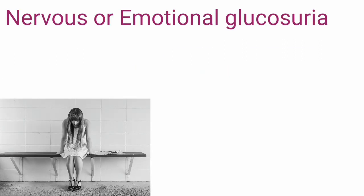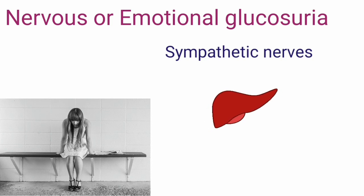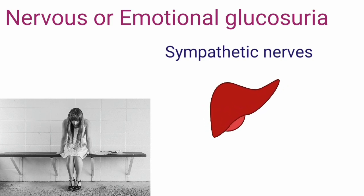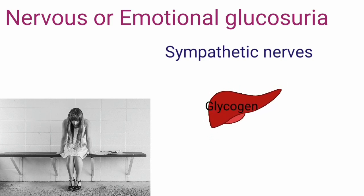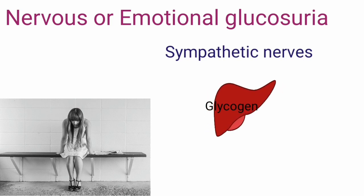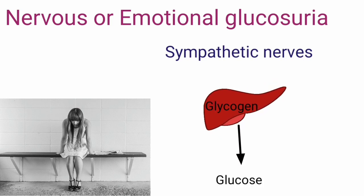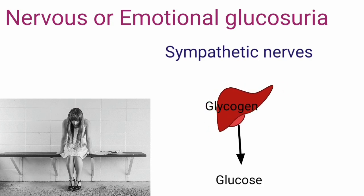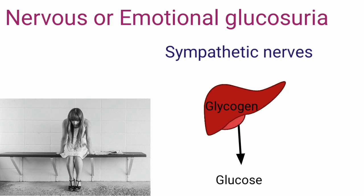Nervous or Emotional Glucosuria is due to stimulation of the sympathetic nerves to the liver. This leads to increased breakdown of liver glycogen, which produces hyperglycemia and Glucosuria. Anything that stimulates the sympathetic system, such as excitement or stress, may produce Glucosuria.